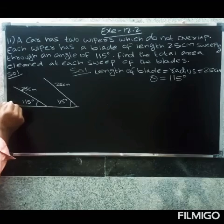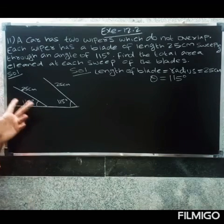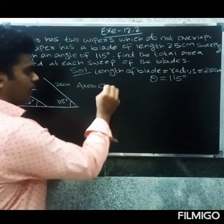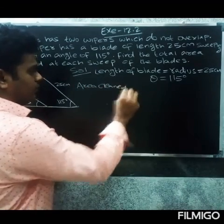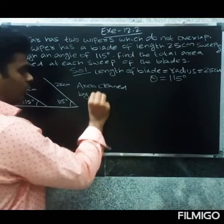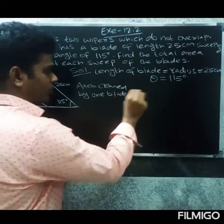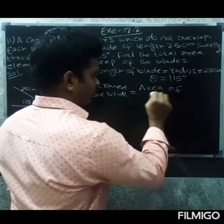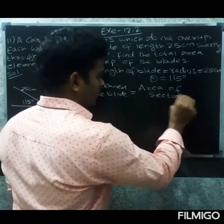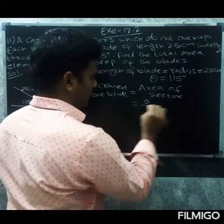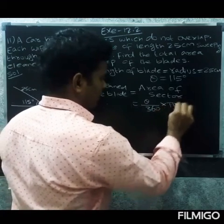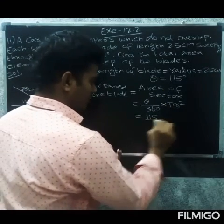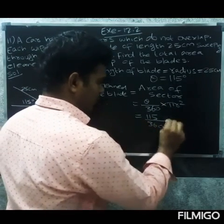The area cleaned by one blade equals the area of the sector. The formula for area of sector is: theta divided by 360, into pi r squared.